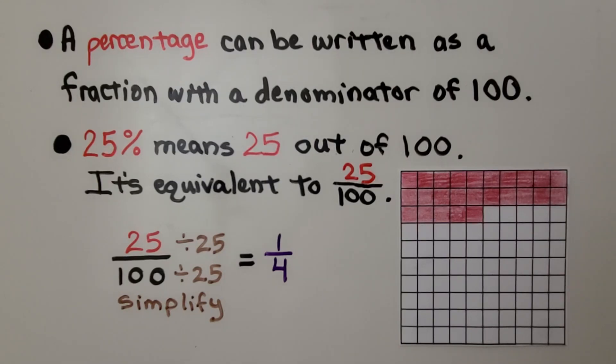So a percentage can be written as a fraction with a denominator of 100. 25% means 25 out of 100. It's equivalent to 25 hundredths.